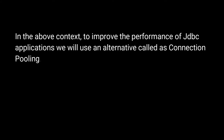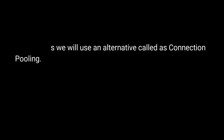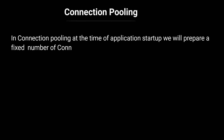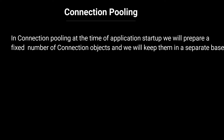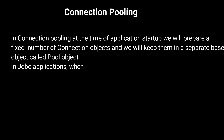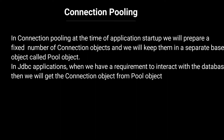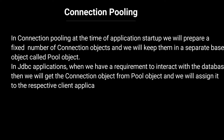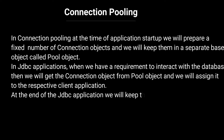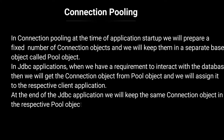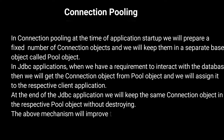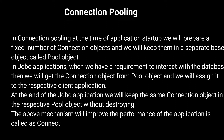To improve the performance of JDBC applications we use an alternative called connection pooling. In connection pooling, at the time of application startup we prepare a fixed number of connection objects and keep them in a separate base object called a pool object. When we have a requirement to interact with the database, we get a connection object from the pool object and assign it to the respective client application. At the end of the JDBC application we return the same connection object to the pool object without destroying it. This mechanism is called connection pooling.